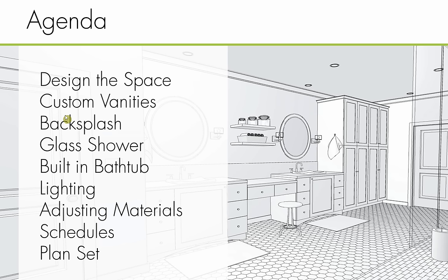We're going to focus on our bathroom space today. We'll start out by designing our space: drawing out walls, dimensioning, and creating our bathroom space. Then we'll get into custom vanities, working with our cabinet tools and fixtures. We'll also touch on a custom backsplash tool, a glass shower, a built-in bathtub, lighting options, electrical, and adjusting materials throughout. We'll finalize with our cabinet schedule, materials list, and a brief plan set.